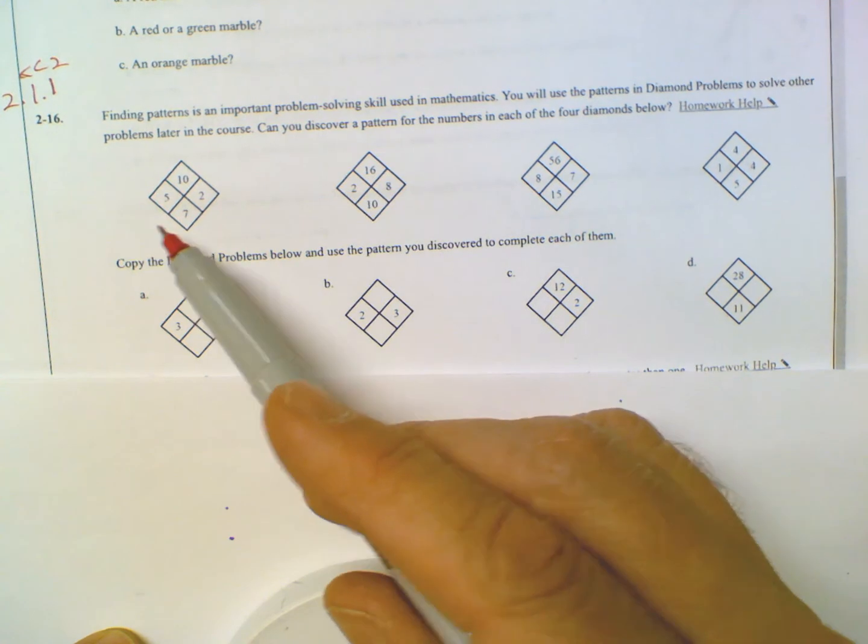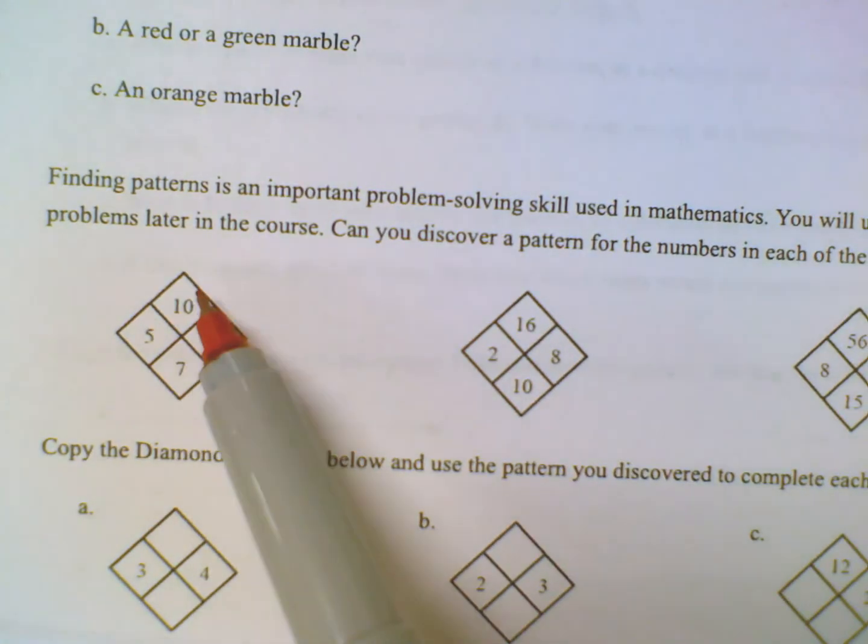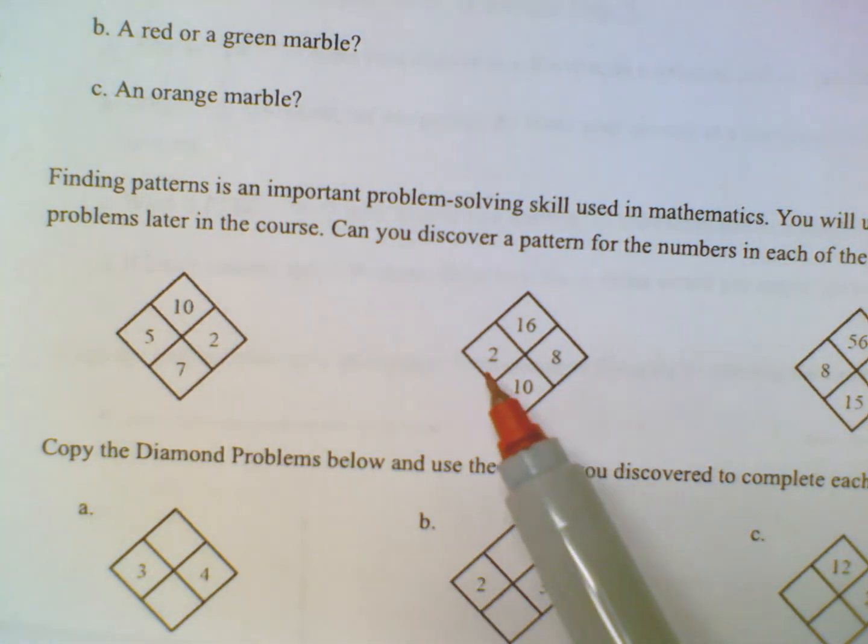So here's my numbers, right? So the first one, you've got a 10 on top, a 7 on bottom, and then a 5 and a 2. So they want to know, can you see the pattern? What is the relationship with 5 and 2 and 10 and 7? Over here, you have a 2 and an 8 and a 16 and a 10. So what's the relationship?